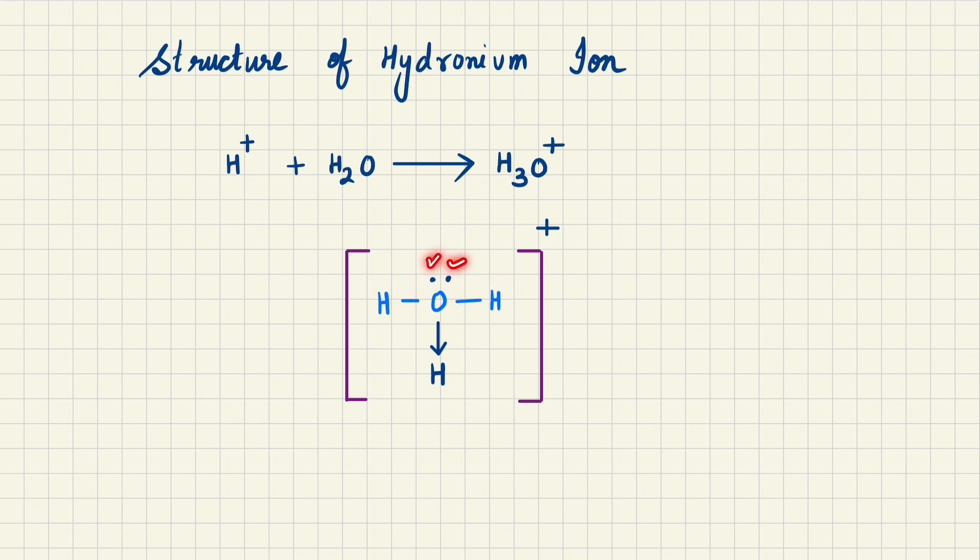On the top of oxygen, there is a lone pair of electrons present. As soon as this H+ ion from the acid comes into action, the plus portion of H+ moves onto the entire system, and oxygen's lone pair comes to this hydrogen.